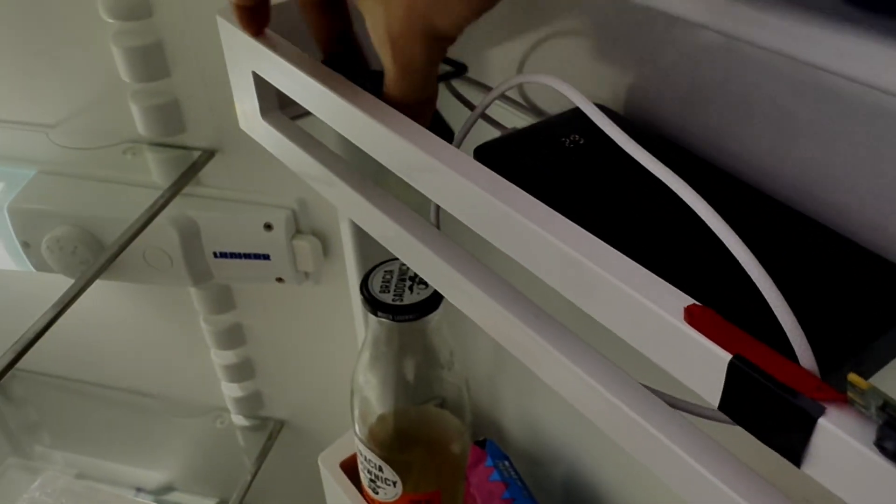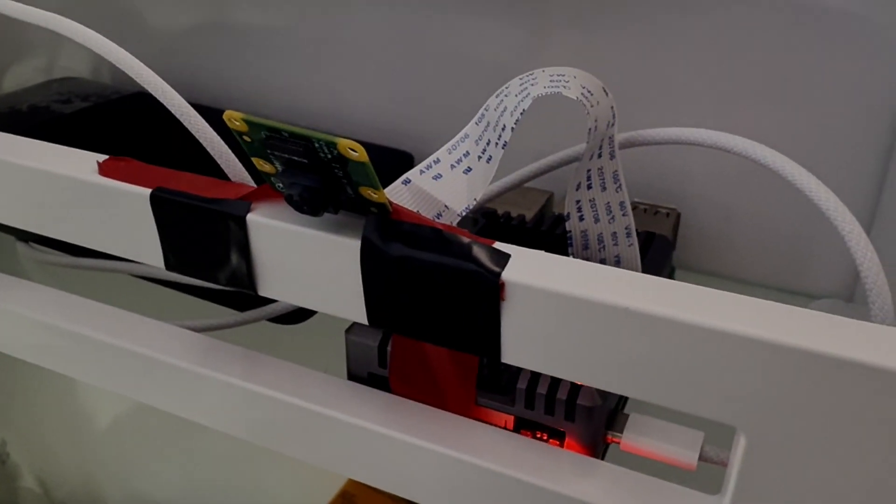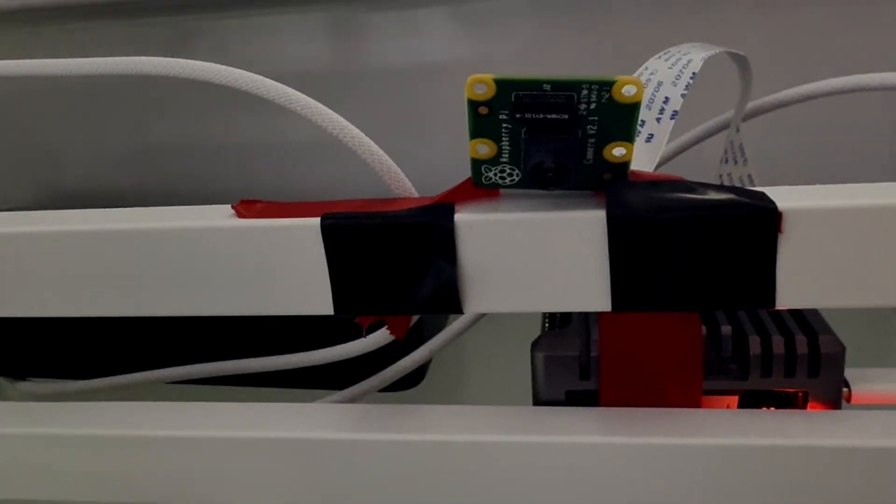It's just a POC so it's quite big but I can easily shrink the size by order of magnitude by replacing power bank with internal power supply and Raspberry with smaller microcontroller. Let's say I am in the supermarket and I forgot, do I have any left?